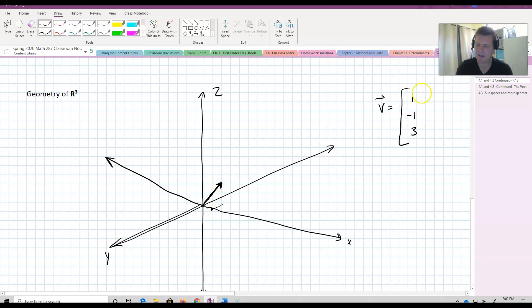If I want to scale it, 2 times V is going to equal 2, negative 2, 3. And what is it going to do? It's going to just stretch. It's going to go along the same direction. So, that scalar multiplication is just going to stretch it by 2.